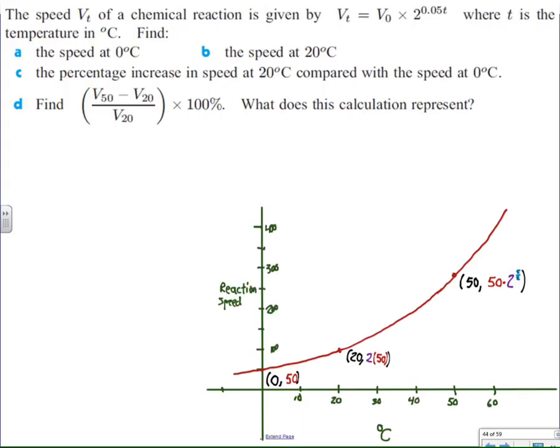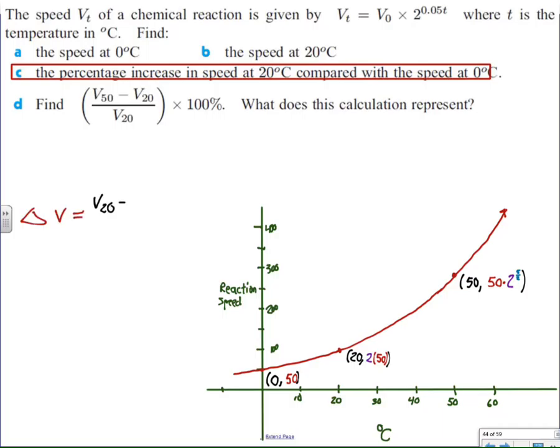So, doing the same thing that I did before, trying to find the percentage increase in speed from 20 compared to 0, is simply a matter of subtracting V of 20 minus V sub 0 over V sub 0, which is 50 over 50, or 1, or in other words, 100% increase. So, even though I started with a slower reaction speed than I did before, I still have the same 100% increase over the first 20 degrees.